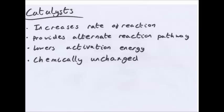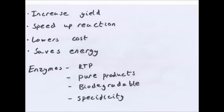So catalysts increase the rate of reaction by providing an alternate reaction pathway that has a lower activation energy. And they are chemically unchanged in a reaction. Advantages of catalysts: they often increase the percentage yield, they just increase yield. Because if they increase the rate of reaction you get more product quickly as they speed up reaction.